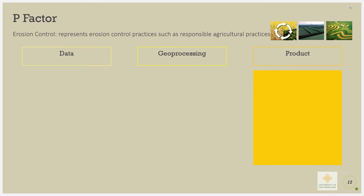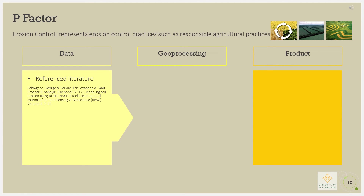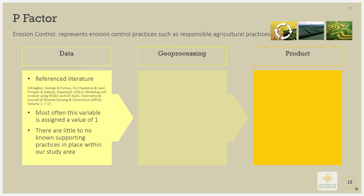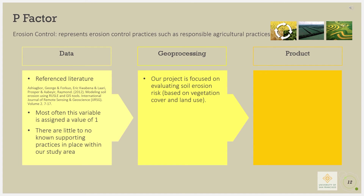Erosion control, or the P factor, represents erosion control practices that can reduce soil erosion. From our research, we found that P is usually used to calculate the supporting effects of practices, and most often this variable is assigned a value of 1, indicating that there are no supporting practices in place within the study area. Since our project is focused on evaluating soil erosion risk rather than estimating actual soil loss, a value of 1 was set for the P factor in our study.